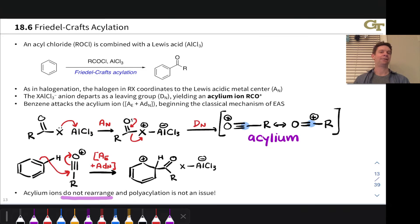At this point, just like in halogenation and Friedel-Crafts alkylation, the AlCl4 minus anion can deprotonate this species to give us an acyl substituted benzene or acyl substituted aromatic ring.